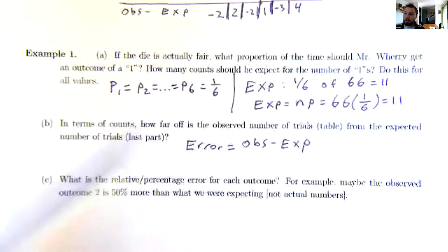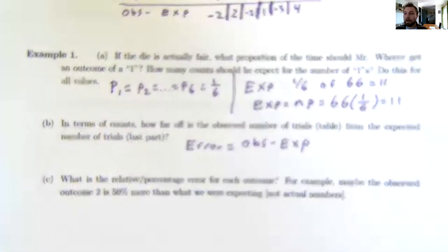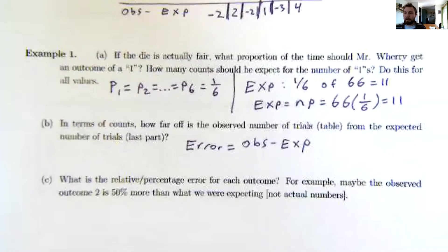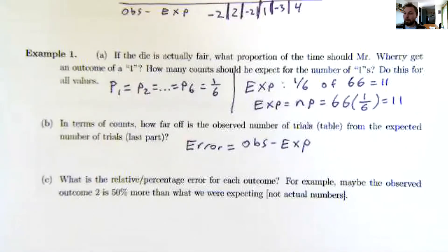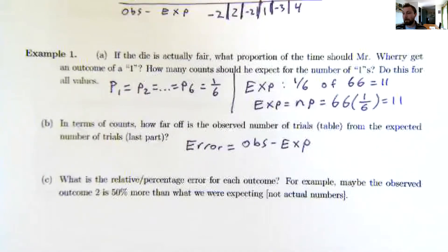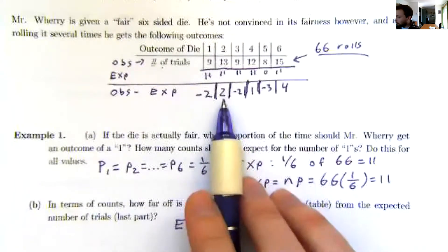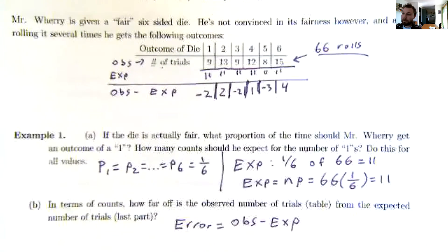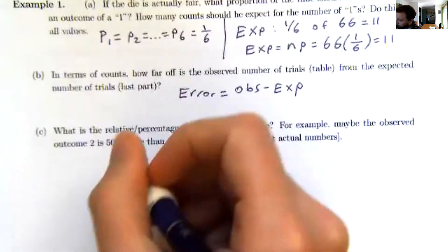Being off by 1 when predicting 200 feels pretty good, but being off by 1 when expecting only 2 is a 50% error—that's considerably worse. So it's not enough to just say I'm off by 2; I want to know what percentage that represents relative to the expected value of 11. This relative percentage is (observed minus expected) divided by expected.